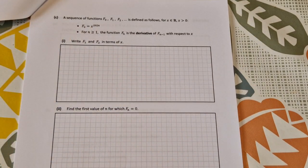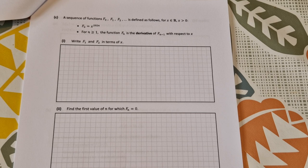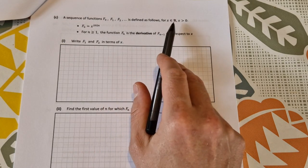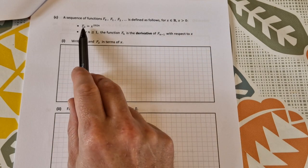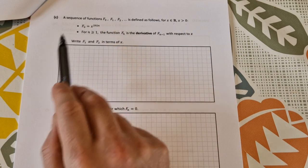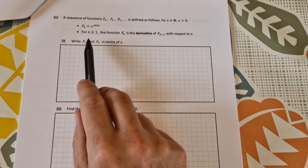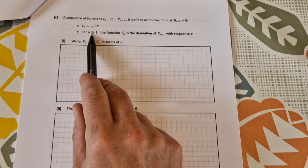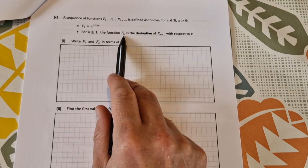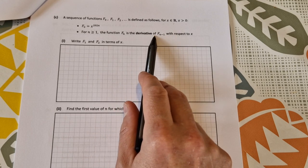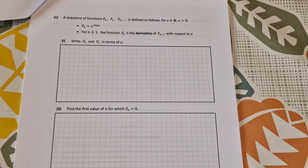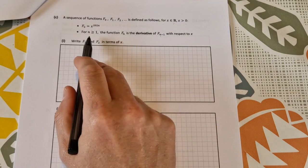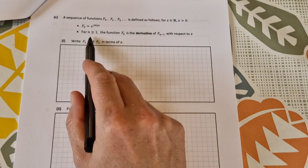Part c of this question: a sequence of functions f0, f1, f2 is defined as follows for x element of real numbers greater than zero. f of zero is x to the power of 2024. For n greater than or equal to 1, the function f of n is the derivative of f of n minus 1 with respect to x. Find f1 and f2 in terms of x.